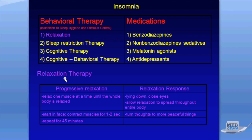Relaxation therapy is divided into two classes: progressive relaxation and relaxation response. Both are somewhat helpful, but probably don't work by themselves. Progressive relaxation involves relaxing one muscle at a time starting in the face for one to two seconds, going down the body, and repeating for about 45 minutes. The relaxation response has the patient lying down, closing their eyes, allowing relaxation to spread throughout the body, and turning thoughts to more peaceful things — essentially reducing anxiety-inducing thoughts.